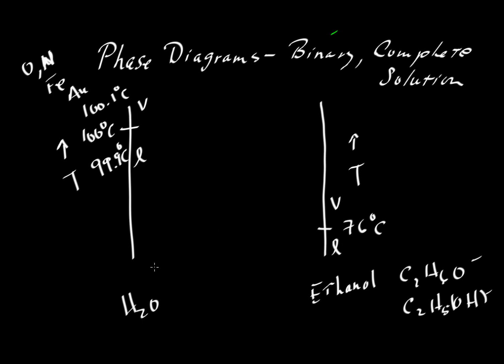But what if we have a mixture? Let's draw a horizontal axis that connects these two. So let's say we have some mixture of ethanol and water dissolved together in one another. H2O and ethanol are a complete solution. We can mix them in any combination we like. They are not immiscible liquids like water and oil or vinegar and oil.